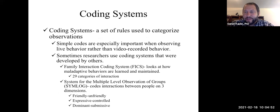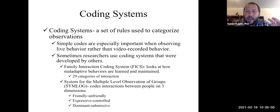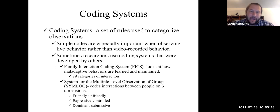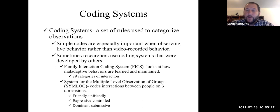If you're going to have specific behaviors you're interested in, you still need to have a coding system — a set of rules that you use to categorize observations. The KISS model: keep it simple, sweetheart. The goal is to make sure your coding system is as simple and easy as possible, because the more complex the coding system, the more error you can have in your data. It's also possible you might be relying on preexisting coding systems created by other people, which will be more manualized and will tell you how to score it.